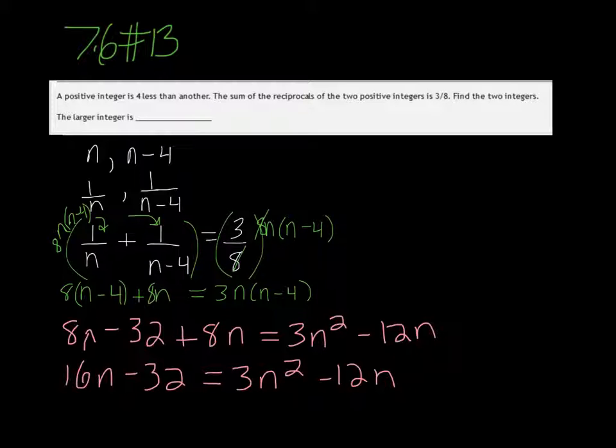Since we're dealing with a quadratic equation here, we need to get everything together on one side and have the other side equal 0. So 3n squared, and if we subtract 16n from both sides, we get minus 28n and then add the 32 equals 0.